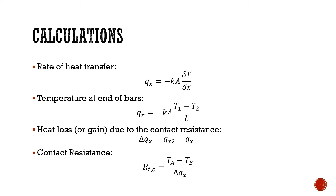Next, you have to find the heat loss or gain due to contact resistance. The heat loss or gain is simply found by subtracting the heat flow at one section in the system from the heat flow before that section in the system, and that will tell you the heat loss or gain at that interface. Contact resistance is formed by R equals (TA minus TB) divided by delta Qx, where TA is the temperature on one side of the interface and TB is the temperature on the other side of the same interface. Naturally, delta Qx would be the heat loss or gain at that interface.